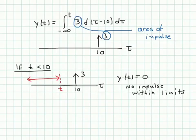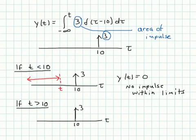Now we have another case. If t is greater than 10, then I can do a different sketch down here. Here's our delta function that is located at 10 with an area of 3. Now t is greater than 10, so let me sketch that and indicate that here. So t is somewhere over here. So our limits of integration run from minus infinity all the way up to t. And in this case, the delta function is included within the limits of the integration. And so we get y(t) is equal to 3, which is the area of the impulse that's included in the limits of integration.